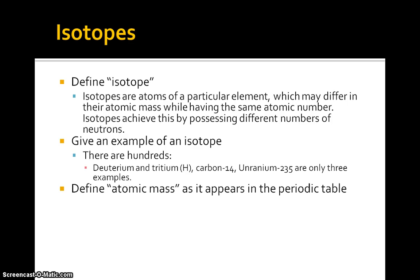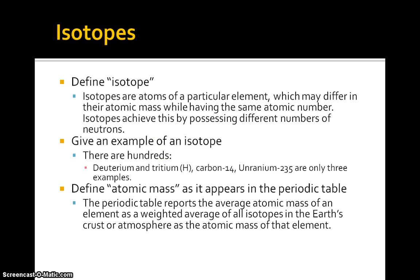Define atomic mass as it appears in the periodic table. The periodic table reports the average atomic mass of an element as a weighted average of all isotopes in the earth's crust or atmosphere. You take the mass number of the isotope, multiply that by its percent abundance, do the same for every isotope of that element, add all those results up, and you'll get the average atomic mass.